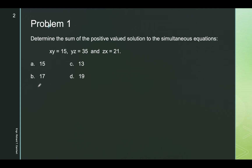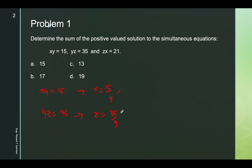From xy equals 15, I can solve for x in terms of y. And from yz equals 35, I can solve for z in terms of y. Then we substitute x and z into the third equation.